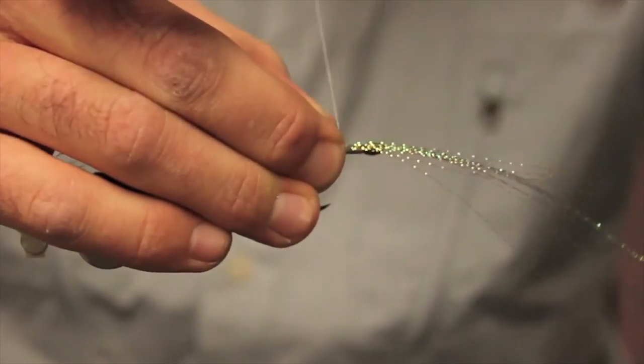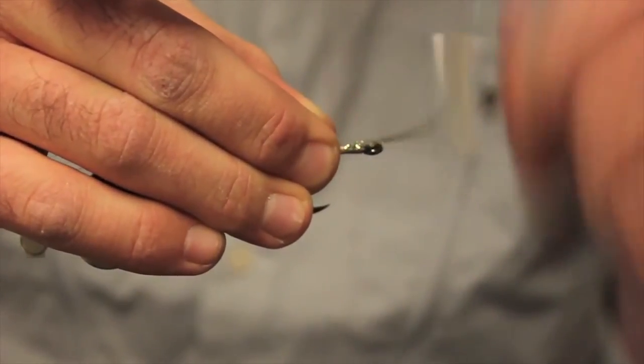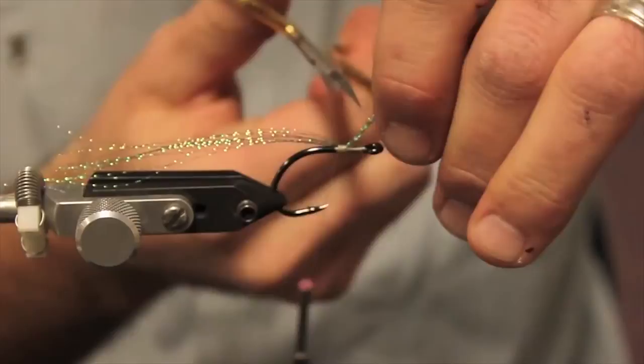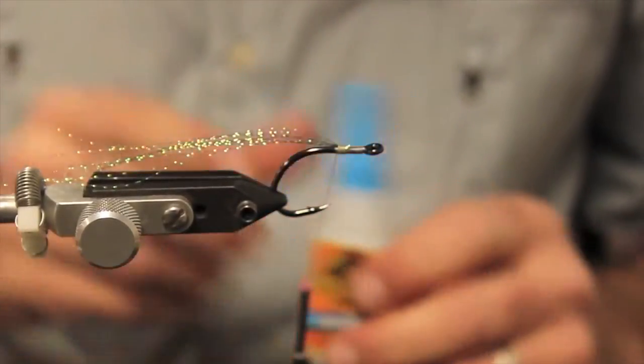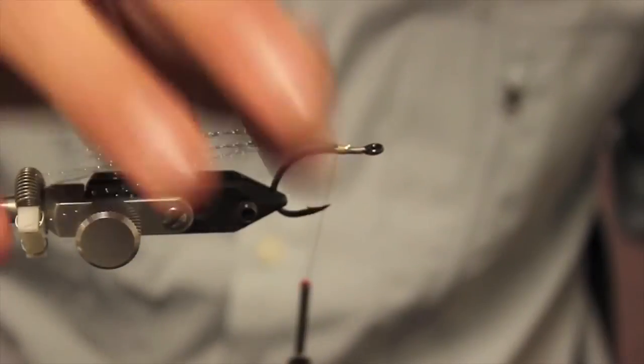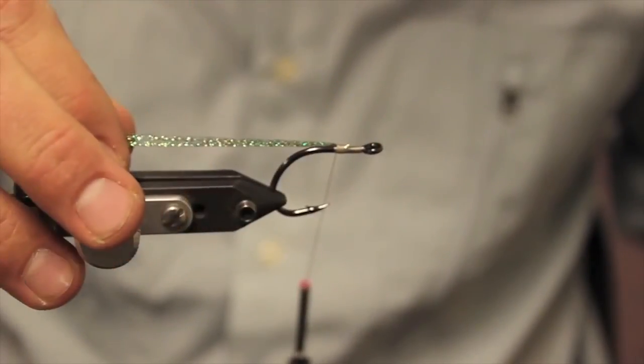So, you just tie this in. Try to keep it on top of the hook if you can. Trim it off. Now, what I use here, you can see it pretty much just flops around. I like to get this part stiff right here.